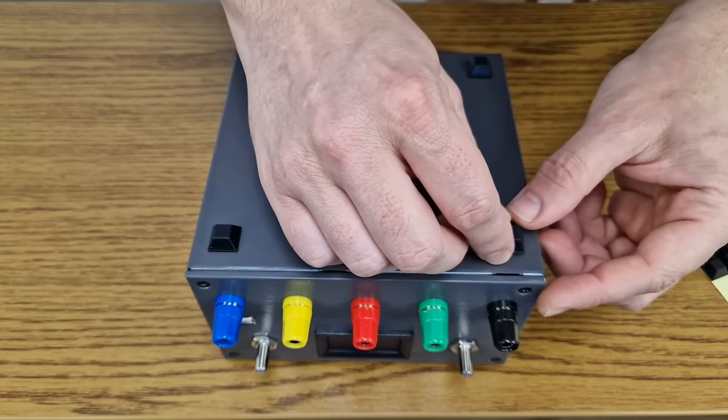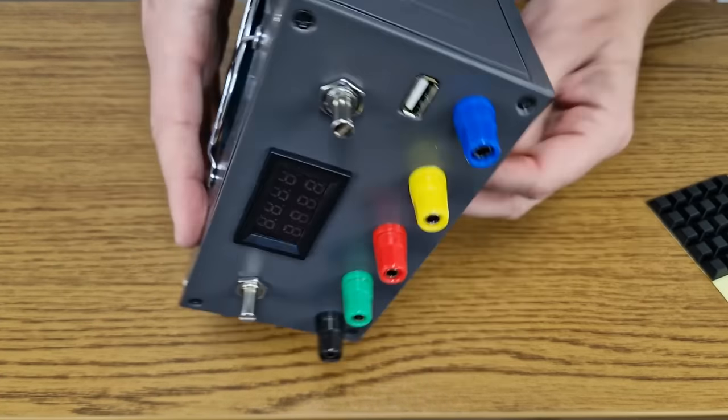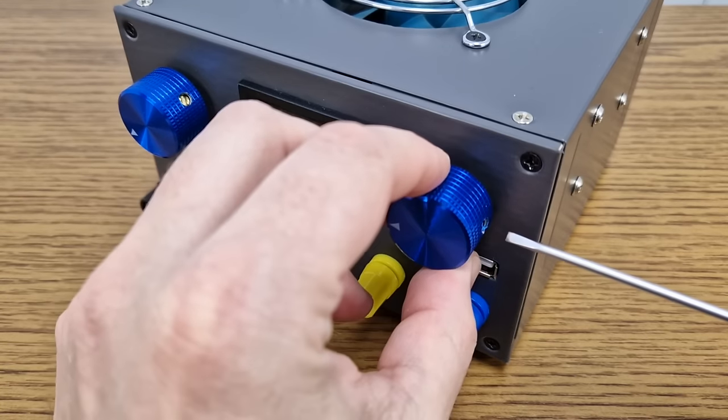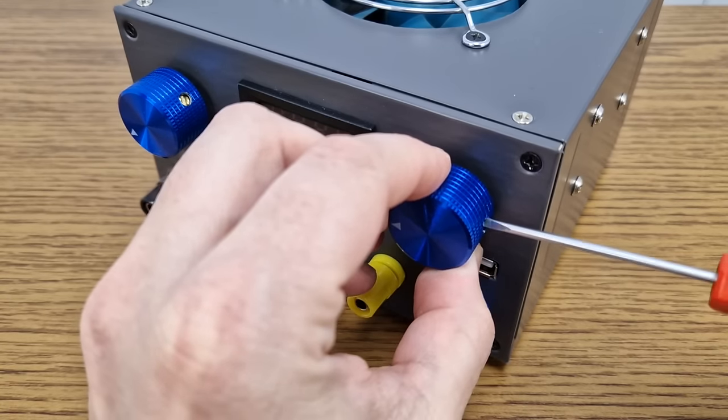On the bottom panel, I will give it four self-adhesive rubber pads. Let's finish this project by adding two nice knobs for the potentiometers.